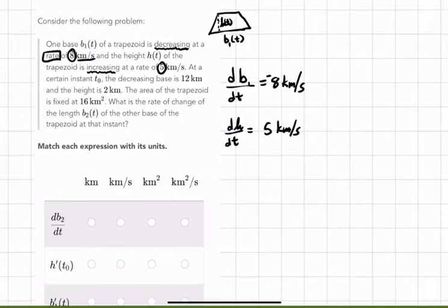At a certain instant, t naught, okay, instead of giving us number, they're giving us t sub zero, which you can say t naught. The decreasing base, that's this guy, the decreasing base, is 12 kilometers. Notice that it just says kilometers. That means it's not a rate, and it doesn't even say rate.